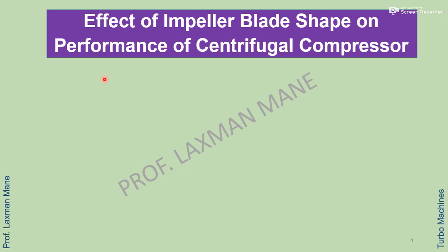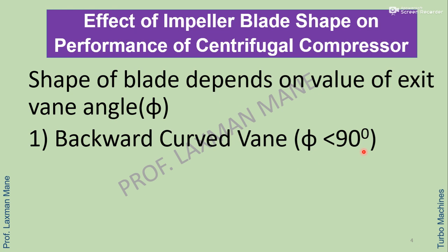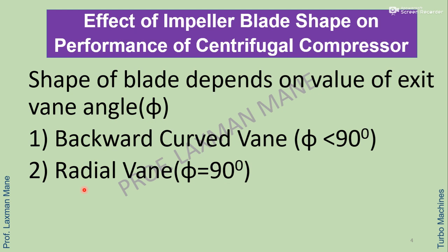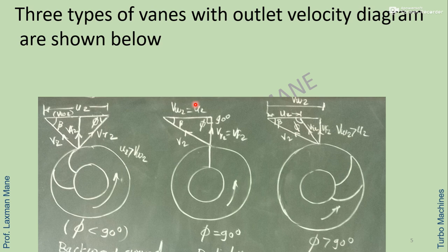Let us discuss the effect of impeller blade shape on performance of centrifugal compressor. The shape of the blade depends on the value of exit vane angle phi. For phi less than 90 degrees the blade is backward curved. For phi equal to 90 degrees it is a radial vane. For phi greater than 90 degrees the blade is forward curved.